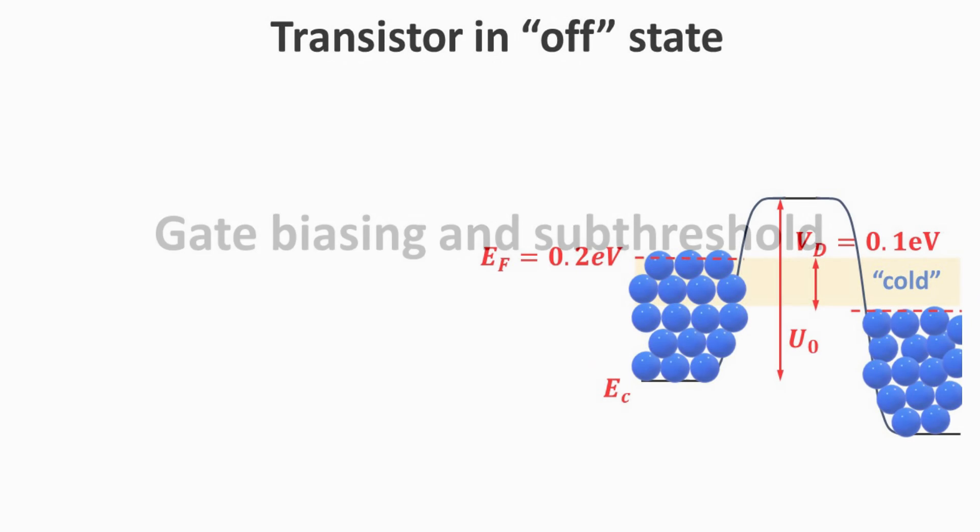Part 5. Gate Biasing and Subthreshold. Let's consider the transistor in the off state, where the channel barrier is visibly above the source Fermi energy. Here, we assume the Vd biased at 0.1 volt.